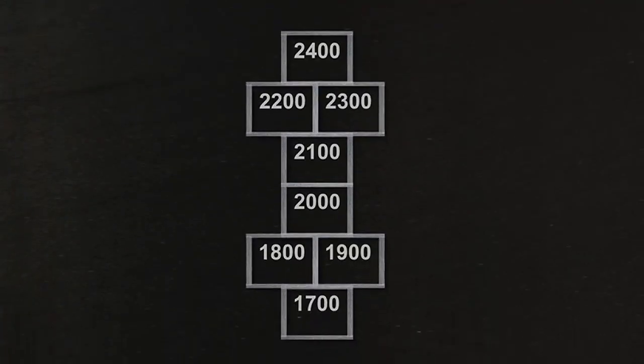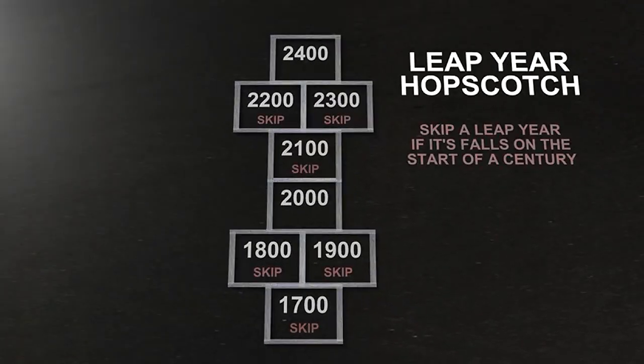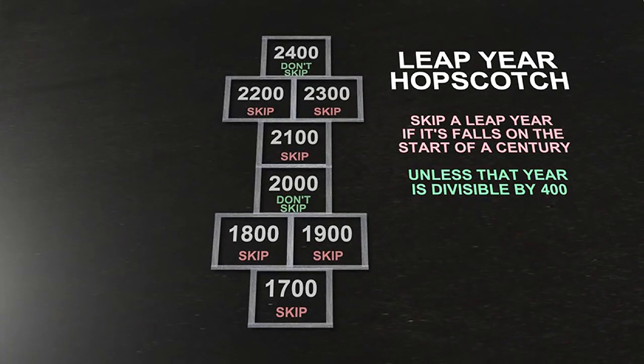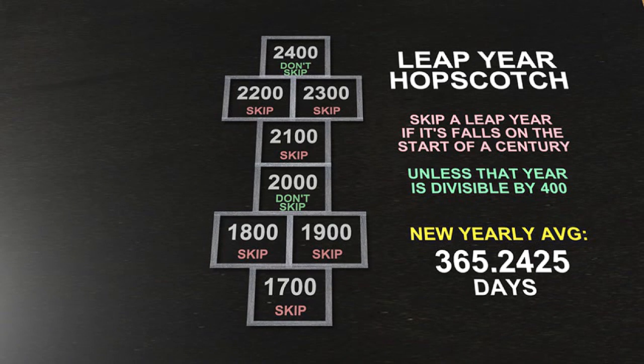But we can do a little better than that. So now we play Leap Year Hopscotch. The rules are that we skip a Leap Year if it falls on the start of a century, unless that number is divisible by 400. So we did not skip the Leap Year back in 2000, but we will in the year 2100, 2200, and 2300. We don't skip again in 2400.